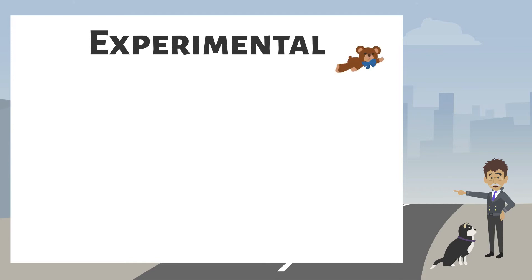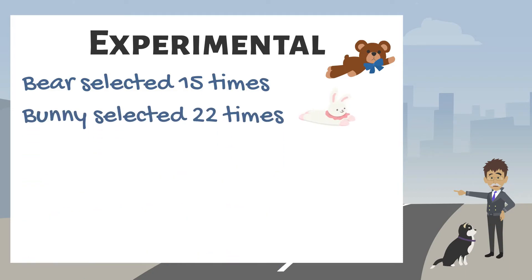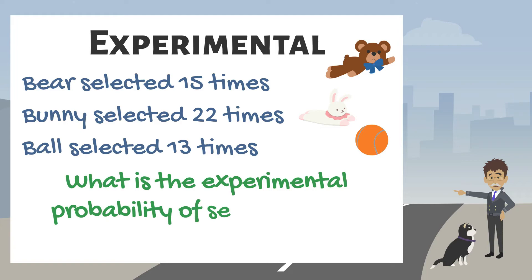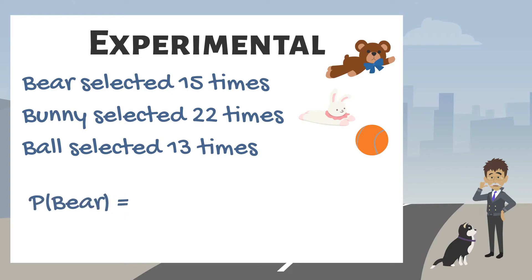she selected Bear 15 times, Bunny 22 times, and her ball 13 times. What is the experimental probability for Random selecting each of her toys? Begin by creating a ratio between the number of times she selected the Bear and the total number of observations. The ratio is 15 over 50 and the experimental probability is 3 tenths or 30%.